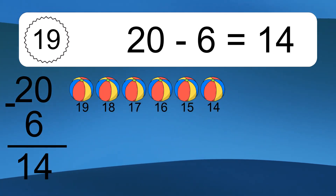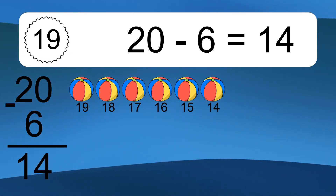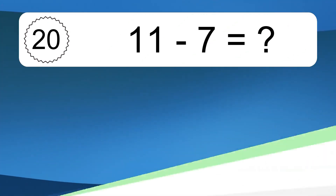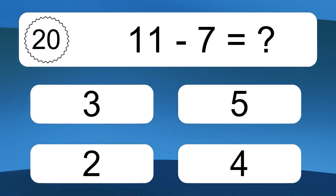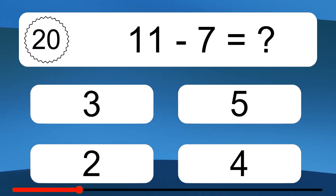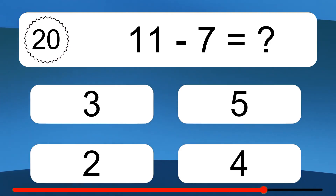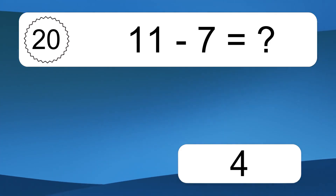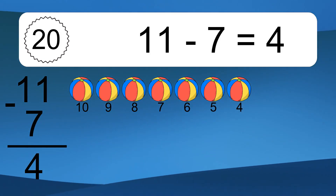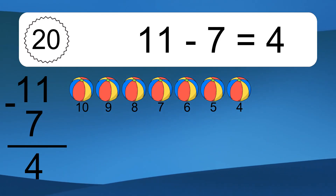20 minus 6 equals what? 20 minus 6 equals 14. 11 minus 7 equals 4. Let's count it: 10, 9, 8, 7, 6, 5, 4.